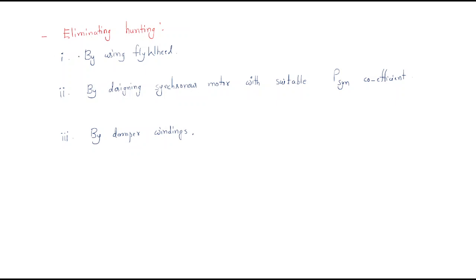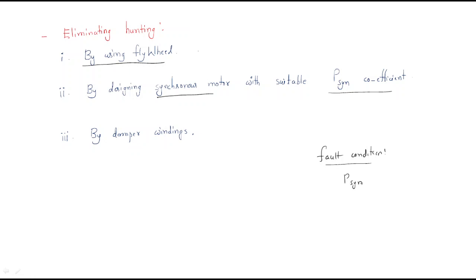To eliminate hunting, the first method is by using a flywheel, which is an important hunting-elimination application. The second method is by designing the synchronous motor with a suitable synchronizing power coefficient. In the fault condition, synchronizing power is developed, and by maintaining the proper synchronizing power coefficient, hunting can be controlled.